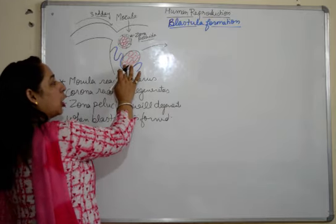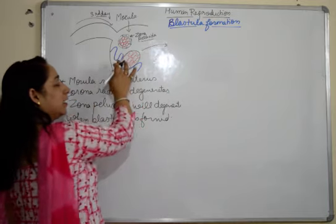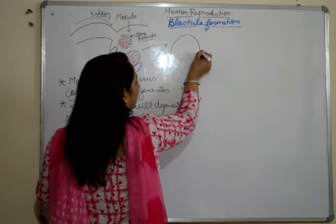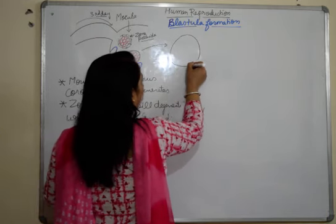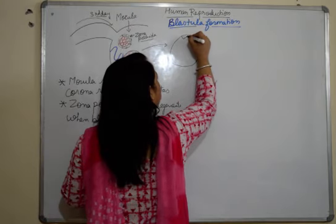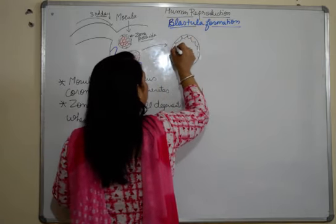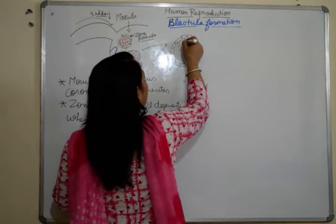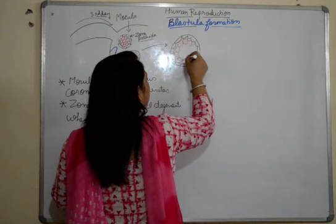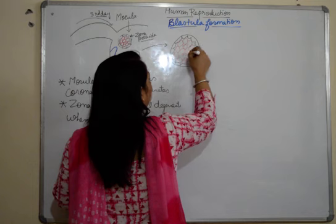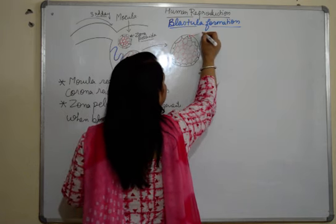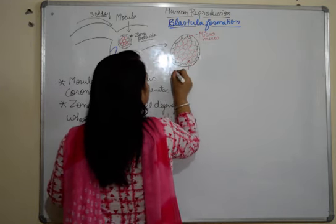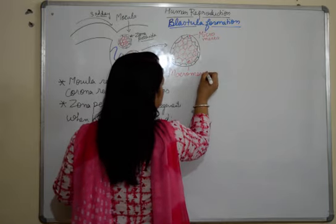Now this morula has placed itself in the endometrium lining — this we did in the last video. Now we are going to talk about what changes are going to take place in this morula. If we remember the structure of morula: the small cells adjust themselves towards the periphery of the morula and the larger ones are arranged in the center. The outer small cells are known as micromeres and the larger ones are known as macromeres.